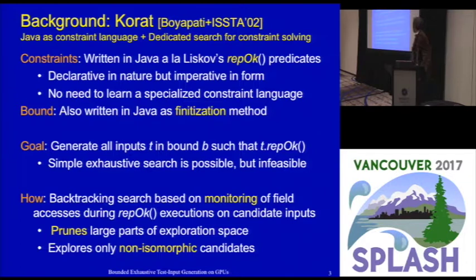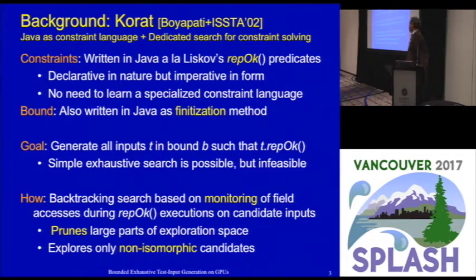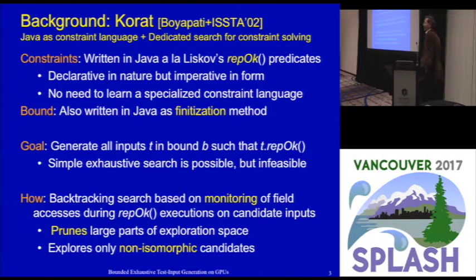The constraint is written as a Java RepOK method. You could use a simple exhaustive search to create all valid inputs by running RepOK against every possible candidate input and checking which ones are valid. However, these spaces even for small bound sizes are very large and cannot be explored in a naive exhaustive way. So Korath uses pruning, implementing a backtracking search which does efficient pruning by monitoring fields accessed during RepOK executions. It also explores only non-isomorphic structures, meaning it creates only non-equivalent tests.